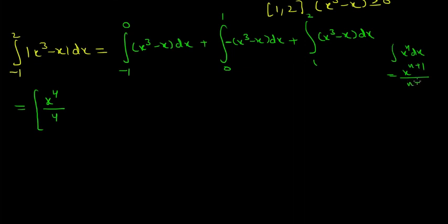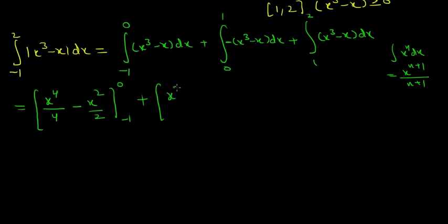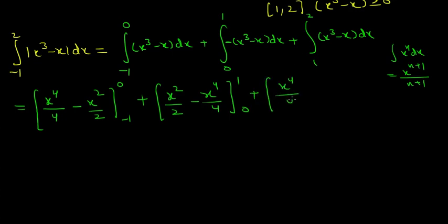Adding a negative sign to the 0 to 1 part: x squared by 2 minus x raised to power 4 by 4 evaluated from 0 to 1. Using the same antiderivative formula and taking the negative sign inside, the signs flip, giving x squared by 2 minus x to the power 4 by 4 from 0 to 1. For the last part, 1 to 2, it's x to the power 4 by 4 minus x squared by 2.